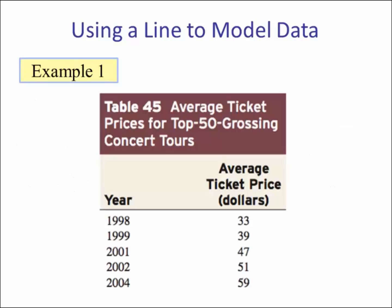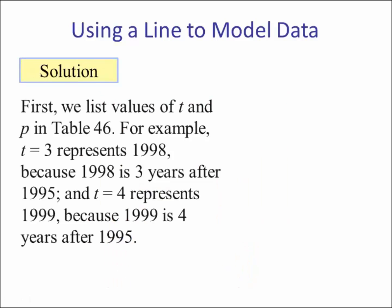So here's our data. We have the years. We're going to change the years to a new variable called t, number of years since 1995, and then we have our dependent variable, average ticket price. So the first thing we want to do is list the values of t. We're going to call this table 46.